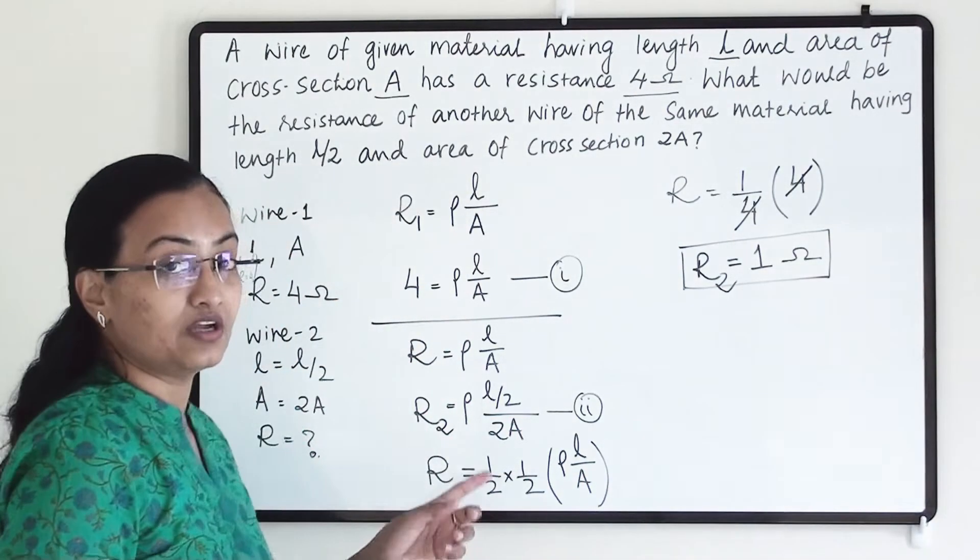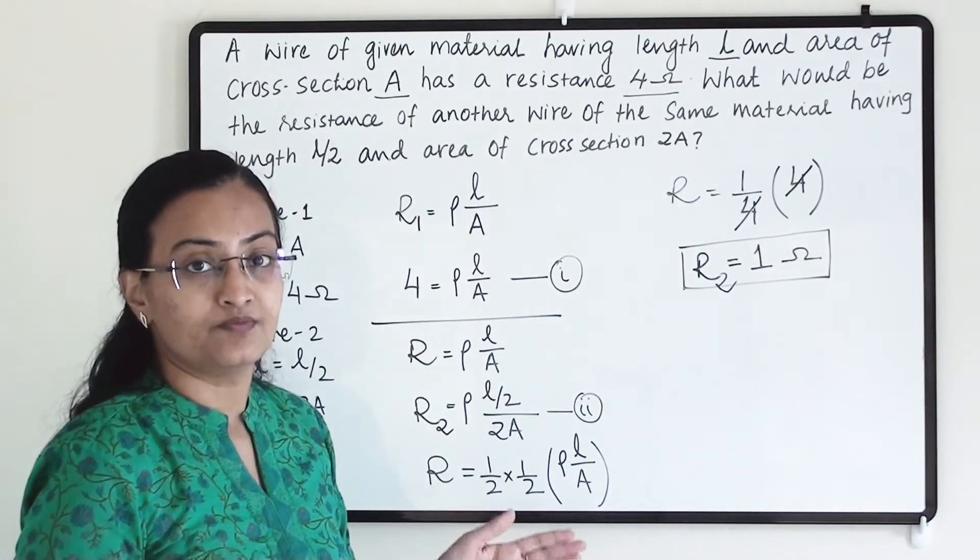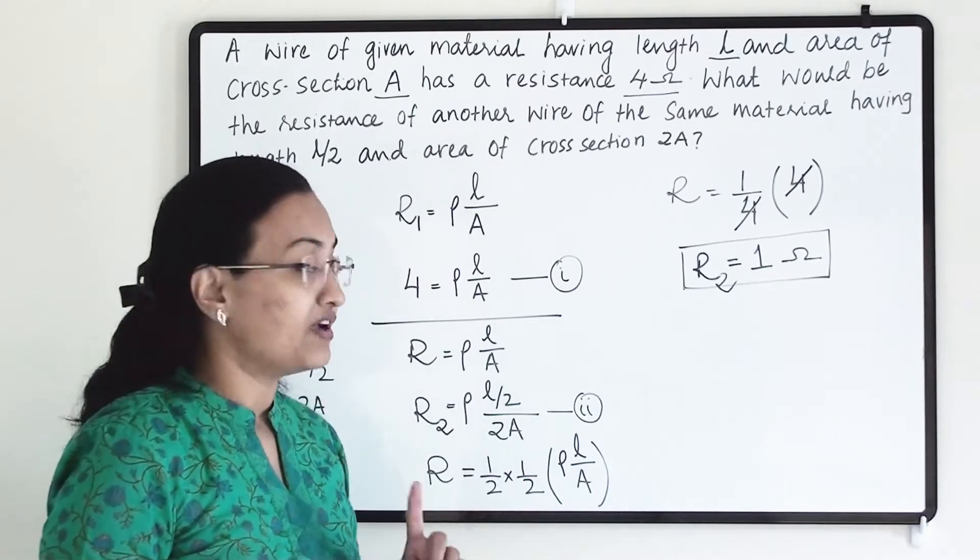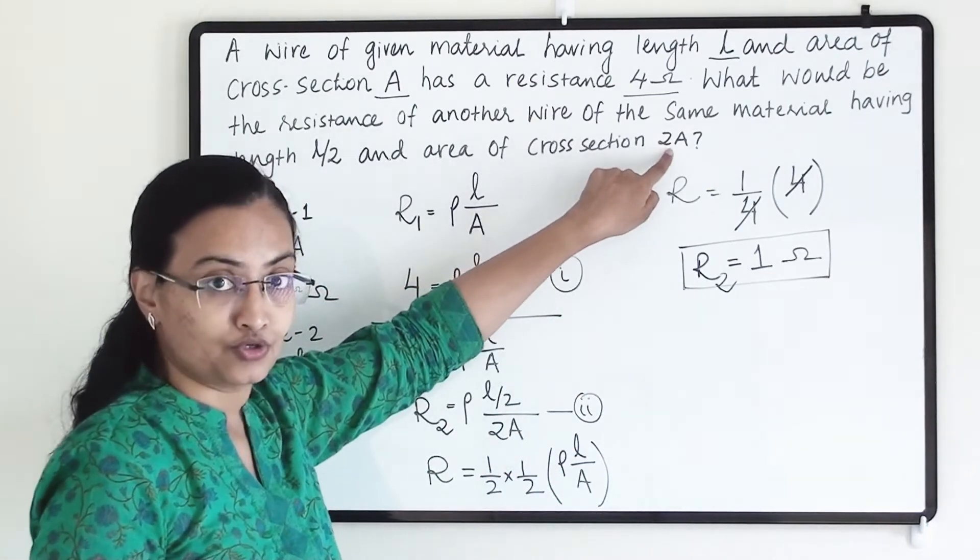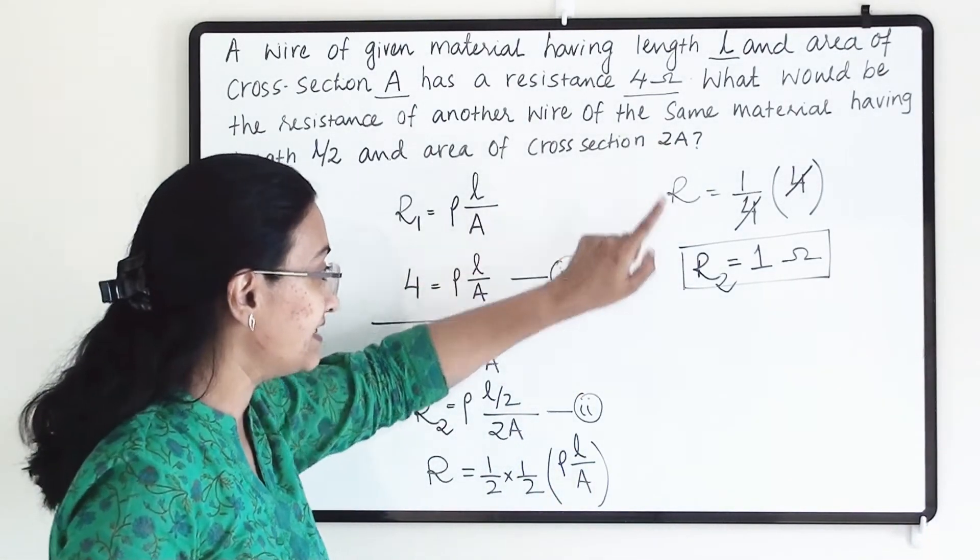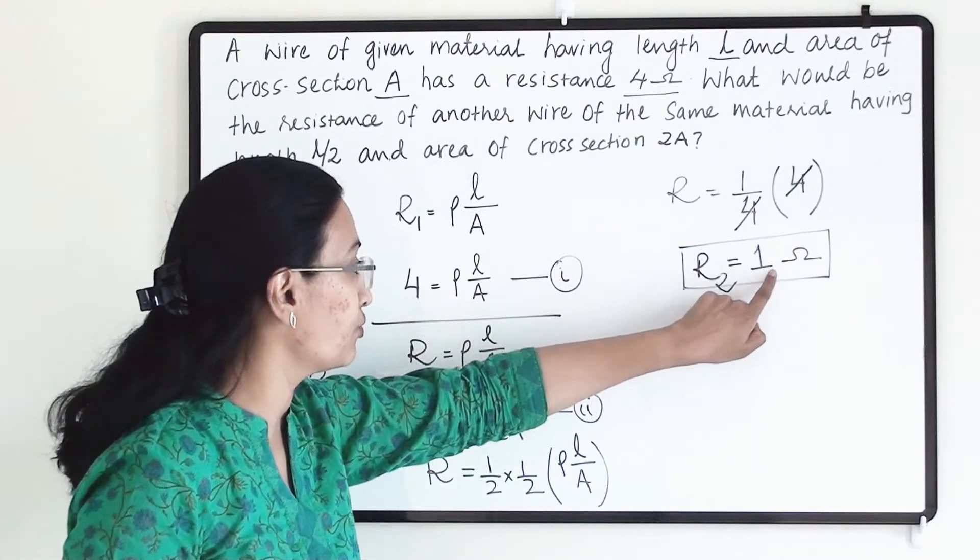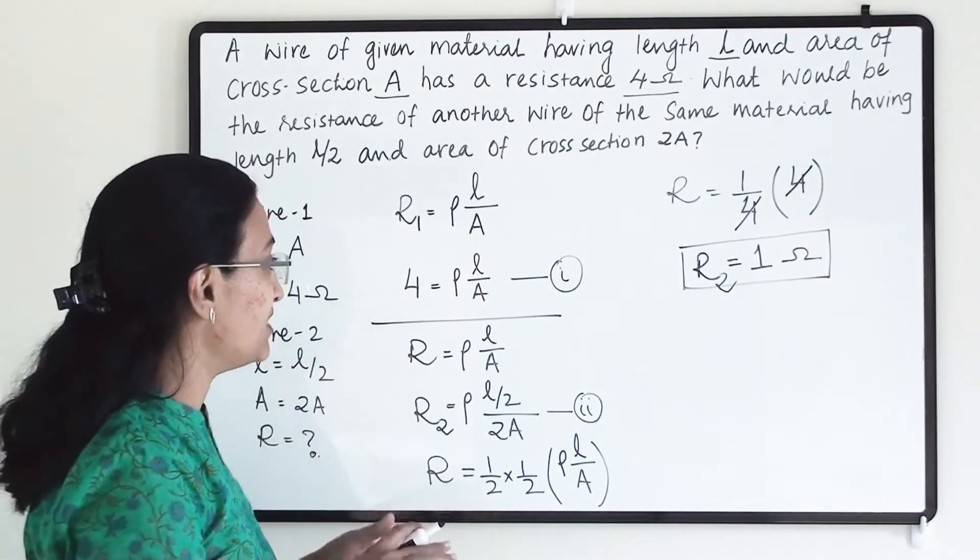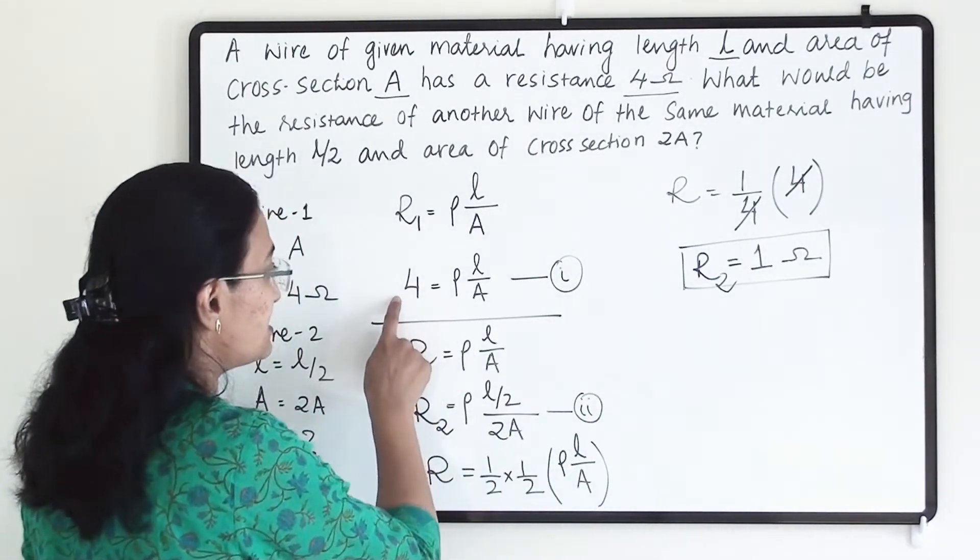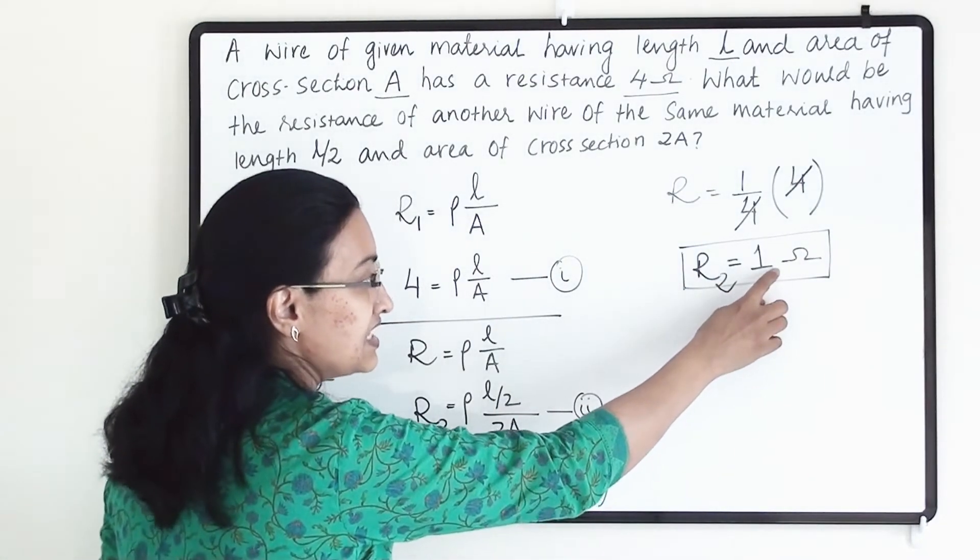So when we are changing length of the conductor and that too we are making it half, and area of cross section we are making it double, at that time resistance will be 1 ohm. Here resistance is 4 ohm. So we can see the difference. Here resistance is more, here resistance is less.